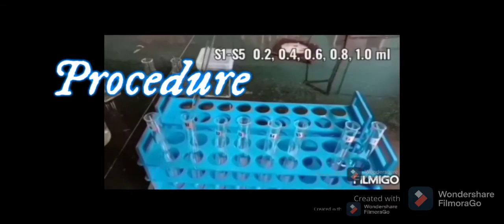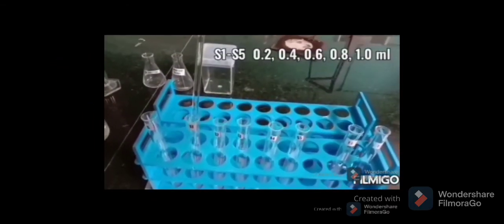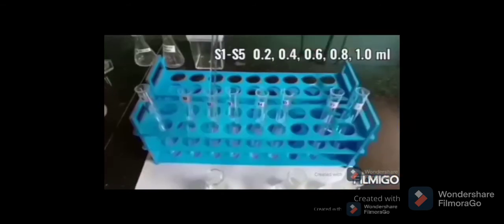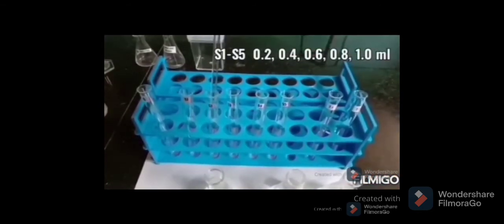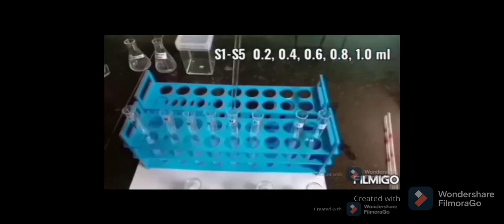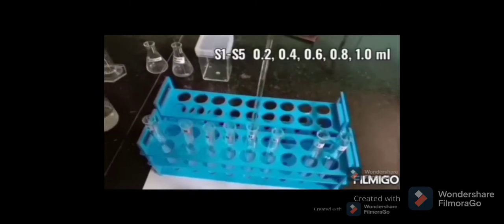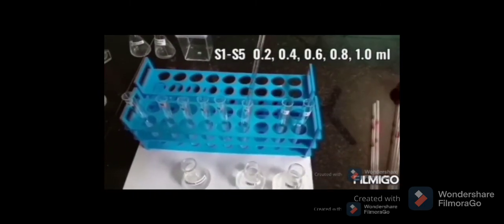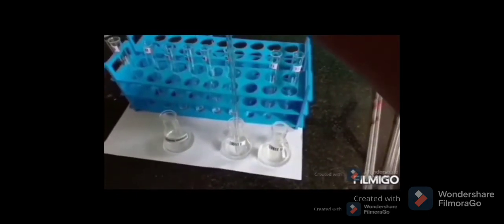The procedure starts with the addition of working standard of 0.25 milligram per ml concentration to standard tubes marked S1 to S5. Add exactly 0.2, 0.4, 0.6, 0.8, and 1.0 ml of working standard to tubes marked S1, S2, S3, S4, and S5. Accuracy of addition is very important in quantitative analysis for getting accurate results.